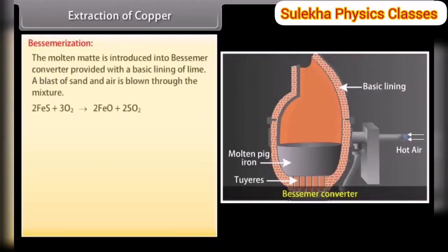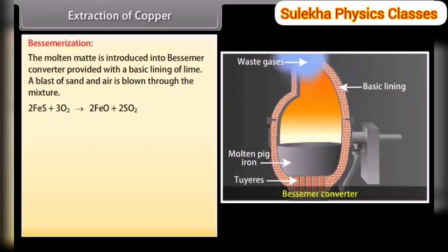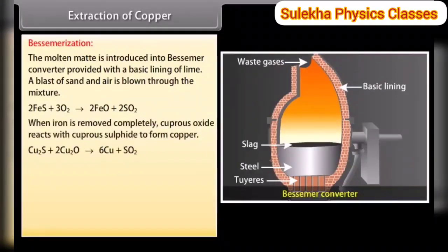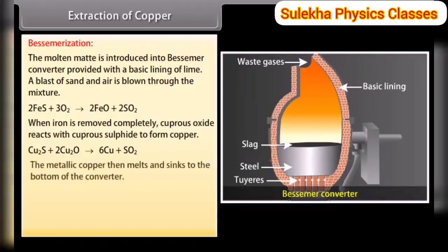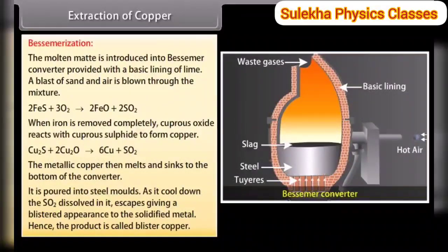Bessemerization: the molten matte is introduced into a Bessemer converter with a basic lining of lime. A blast of sand and air is blown through the mixture. FeO is removed as FeSiO₃. When iron is completely removed, cuprous oxide reacts with cuprous sulfide to form copper. The metallic copper melts and sinks to the bottom of the converter. It is poured into steel molds; as it cools, dissolved SO₂ escapes giving a blistered appearance — hence the product is called blister copper, which contains about 98% copper and is refined electrolytically.